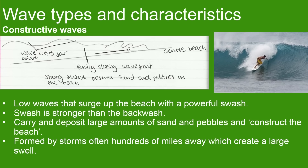Wave types and characteristics — first we're looking at constructive waves. Constructive waves are low waves that surge up a beach with a powerful swash. The swash is stronger than the backwash, meaning it carries and deposits large amounts of sand and pebbles, therefore constructing the beach. They're usually formed by storms found hundreds of miles away, which creates a large swell. Because of the powerful swash, you can see a surfer using the constructive wave as it pushes him forward.